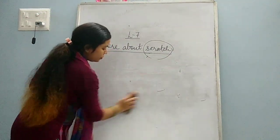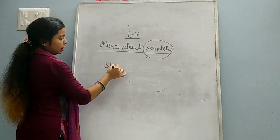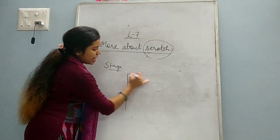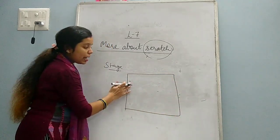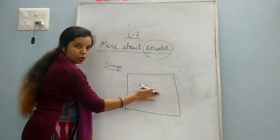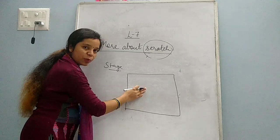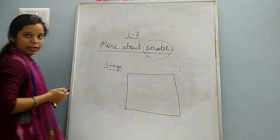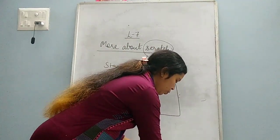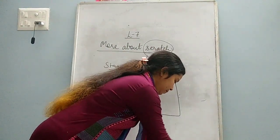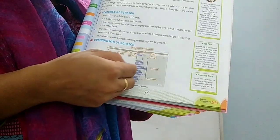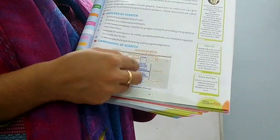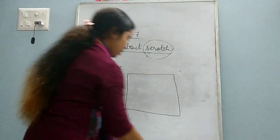Next one is stage. What is this stage? This stage is the area where sprite moves. The area where this sprite lives - that area is called stage. As you can see in your book, this white color space you can see - so this is called stage. Where this sprite lives and moves, this area is known as stage.